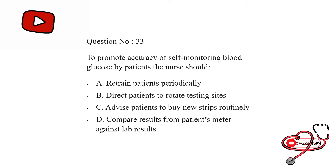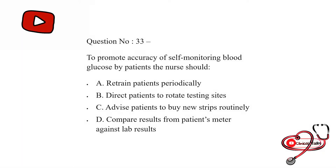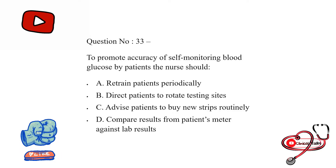To promote accuracy of self-monitoring blood glucose by patients, the nurse should. Option first: retrain patients periodically; second: direct patient to rotate testing sites; third: advise patient to buy new strips routinely; last: compare results from patient's meter against lab results.